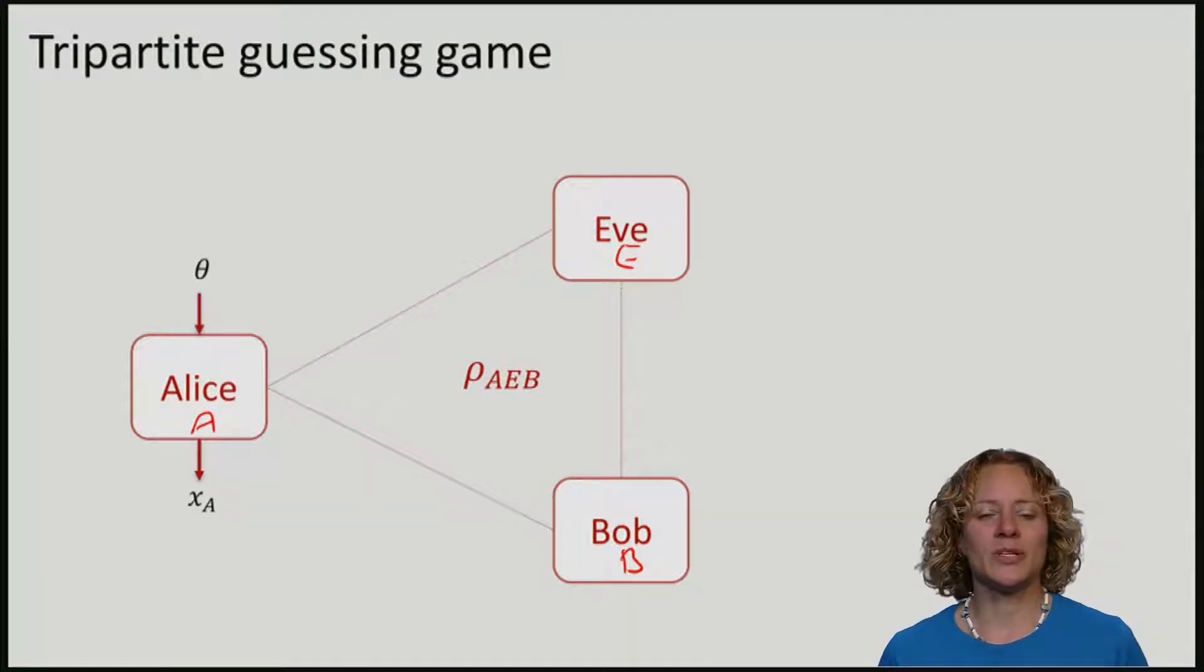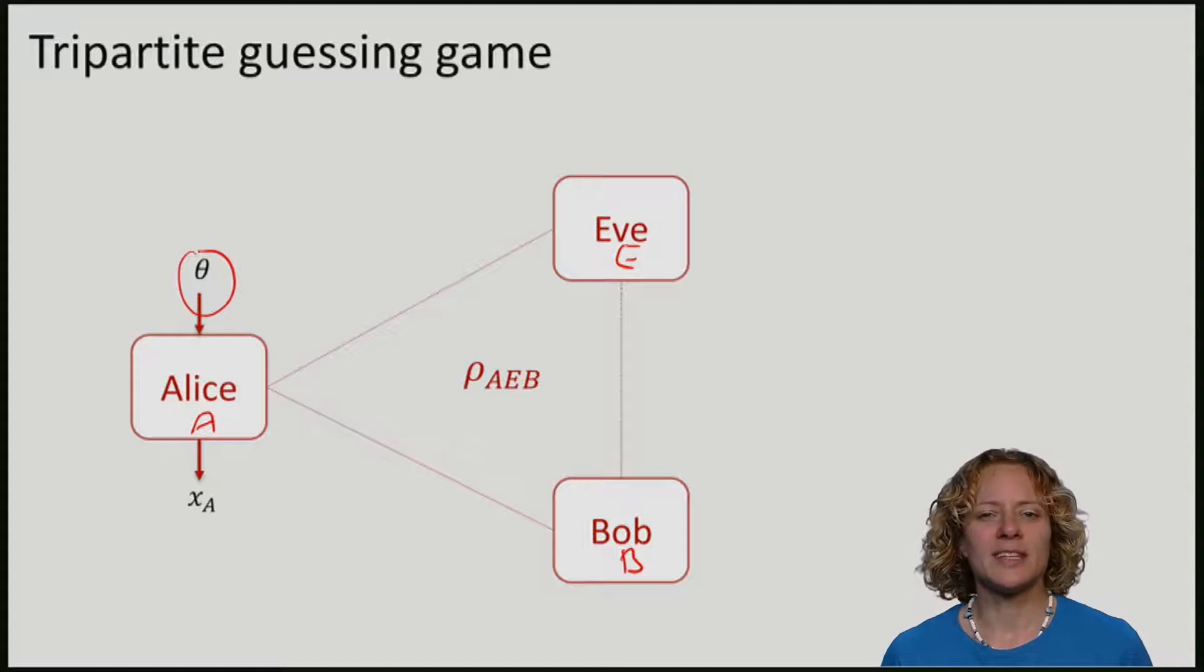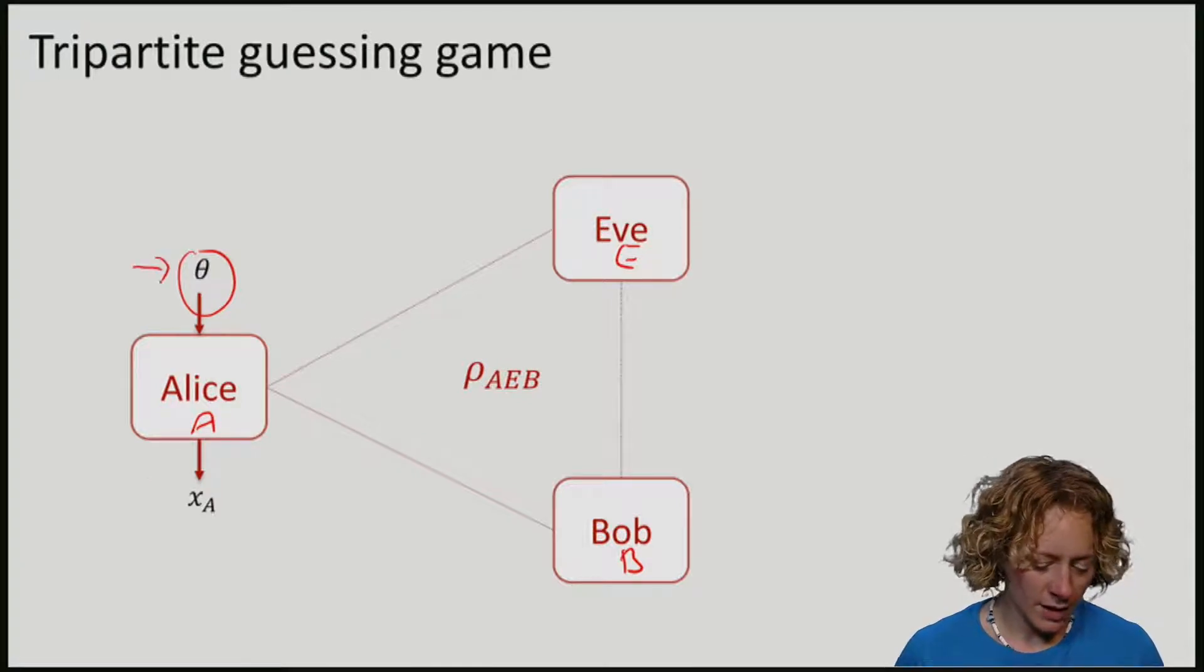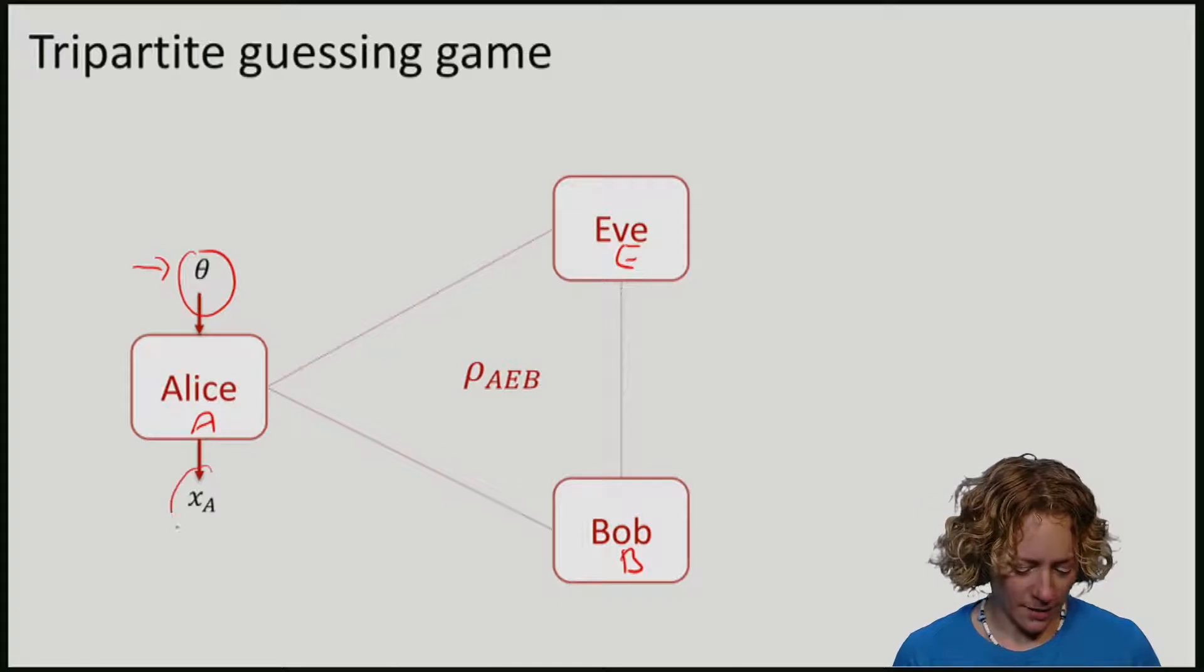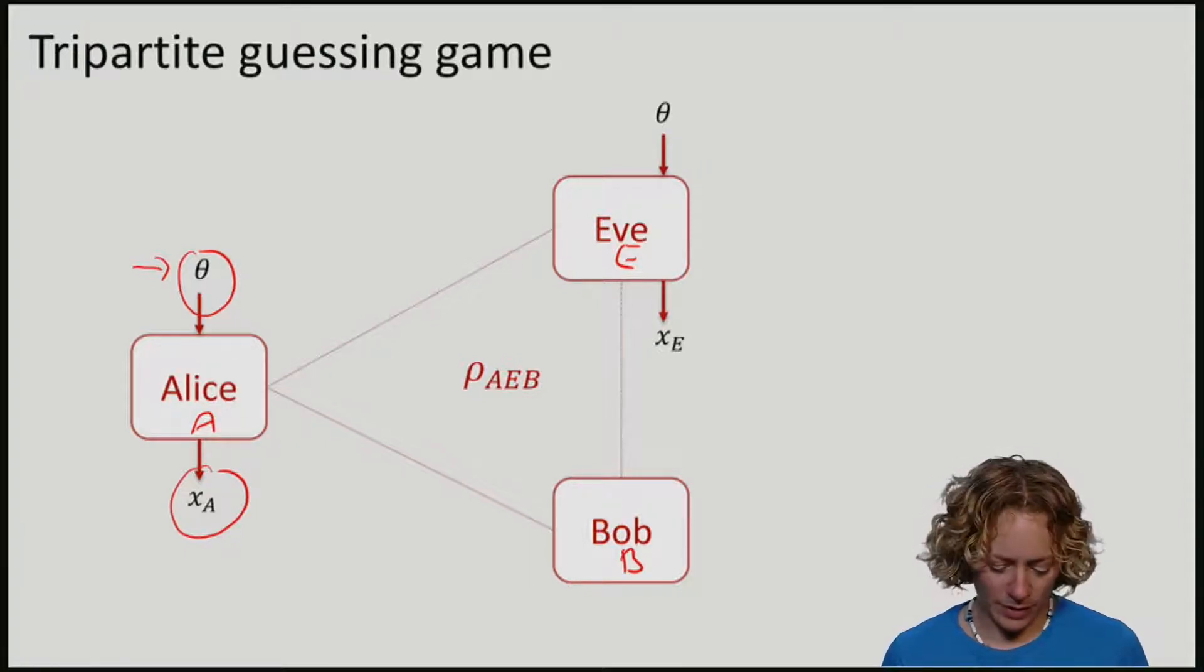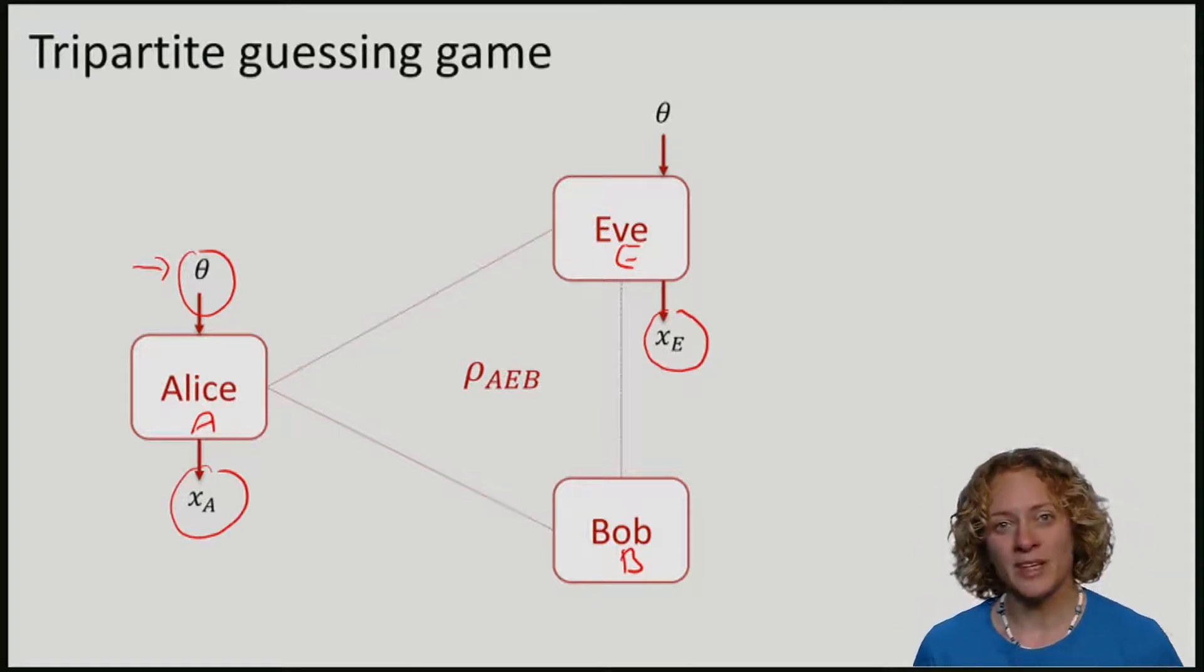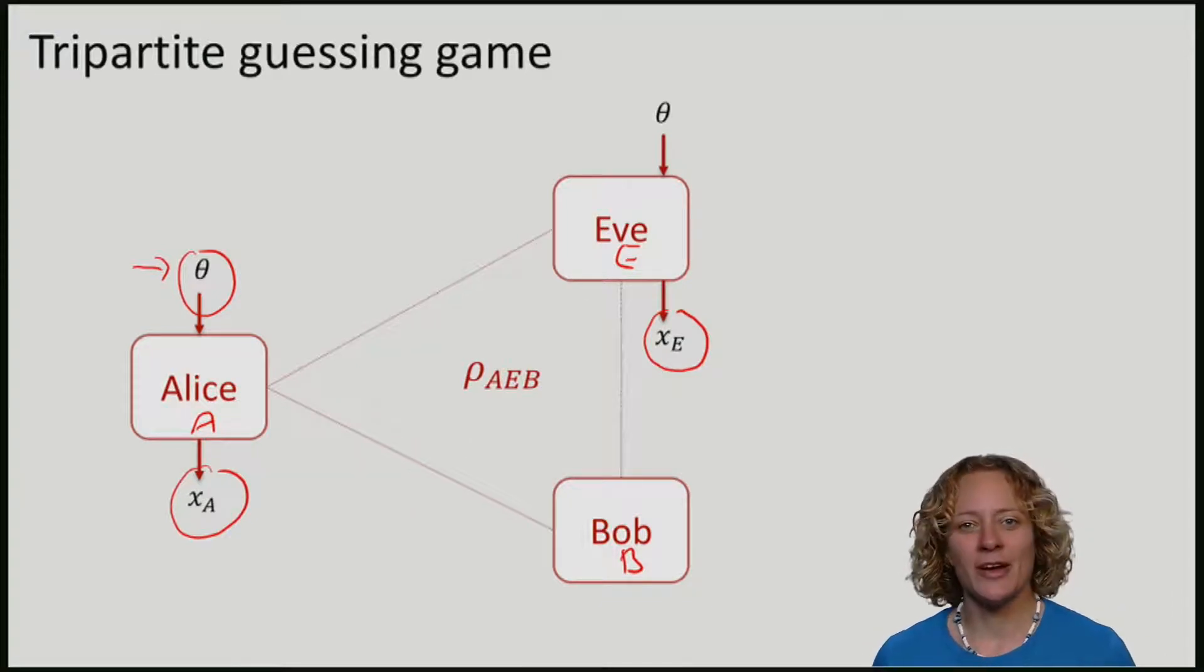Here, I will just think of her as a measurement box that takes as input which basis to measure in and produces a measurement outcome x_A. In the uncertainty game, Eve's goal was to guess x_A. And we had in fact told Eve what the basis θ was. So given that Eve knows the basis θ, she can perform a measurement on E to get an answer x_E. We should be thinking that x_E is really the guess that Eve is going to make for what x_A is.